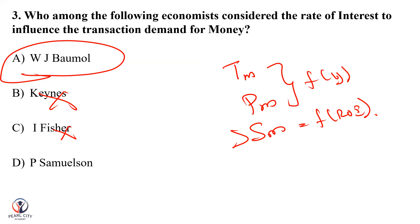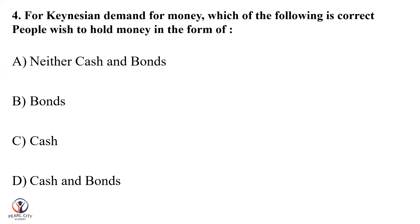This is the right answer. This is a multiple choice question and using the elimination method, the chances of getting the right answer are much higher. People normally demand money for three purposes: transaction motive, precautionary motive, and speculative motive. Speculative demand for money is a function of the rate of interest. One of the main concepts here is John Maynard Keynes.